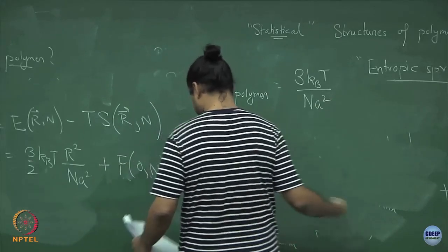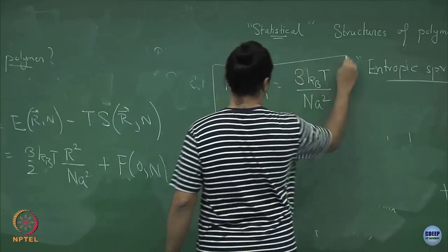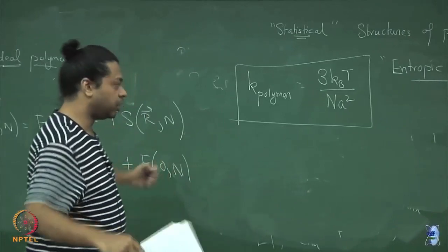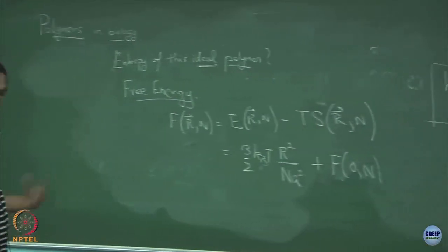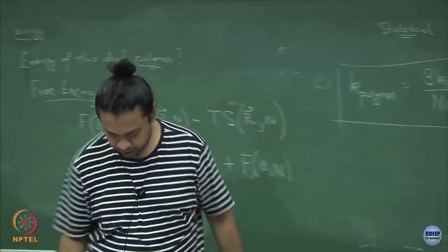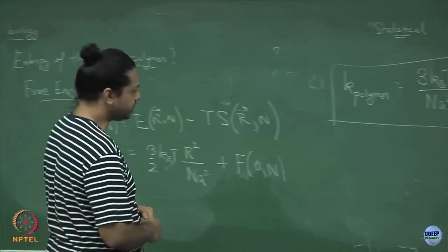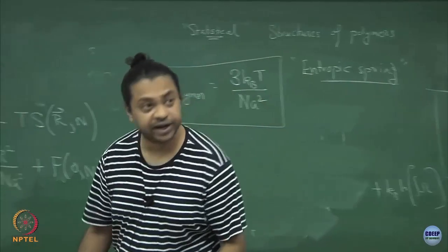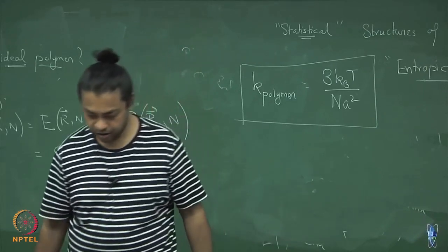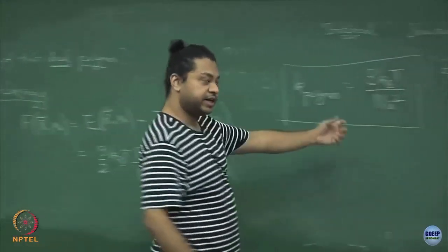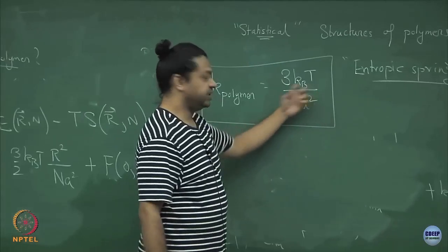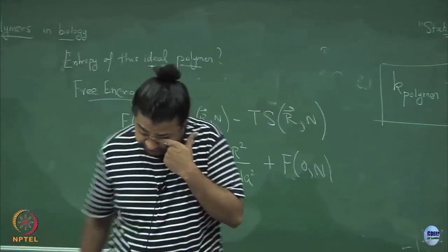If you stretch a polymer it will try to come back to r = 0, and the stiffness of that response is 3k_B T / (na²). What does this mean? For example, if I take a DNA of 100 base pairs versus 10,000 base pairs, the 10,000 base pair DNA would be easier to stretch. The longer the polymer — n in the denominator — the easier it is to stretch. Also, the lower the temperature, the easier it is to stretch.